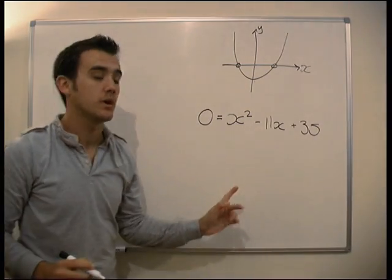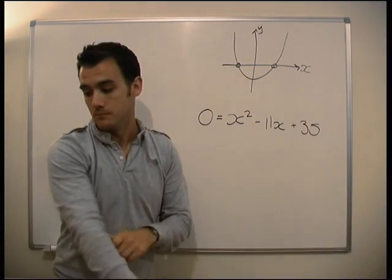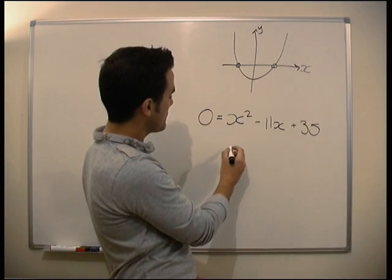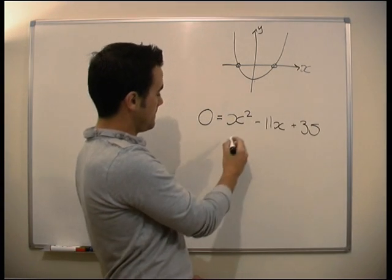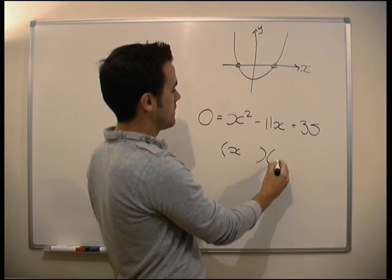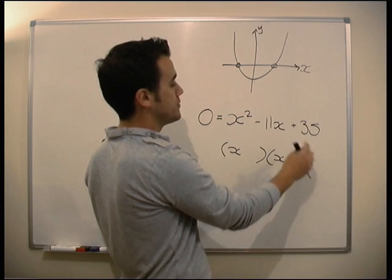We want this to equal zero. That's the only way we can solve these equations. Set them to equal zero. Okay. Let's have a go. We've got our brackets.